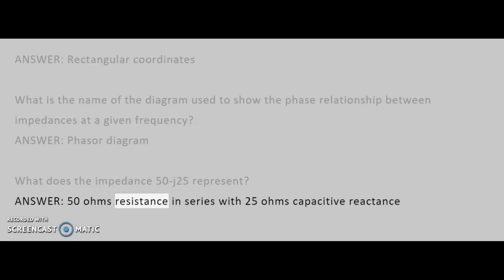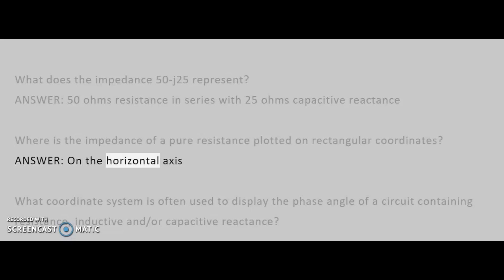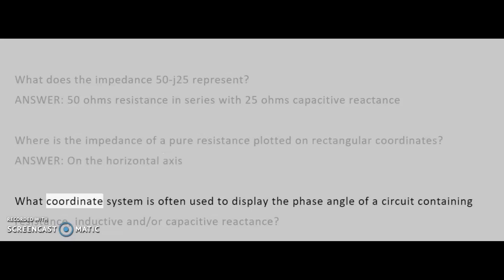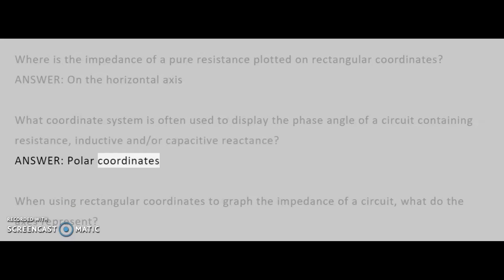What does the impedance 50 -j25 represent? Answer: 50 ohms resistance in series with 25 ohms capacitive reactance. Where is the impedance of a pure resistance plotted on rectangular coordinates? Answer: On the horizontal axis. What coordinate system is often used to display the phase angle of a circuit containing resistance, inductive, and/or capacitive reactance? Answer: Polar coordinates.